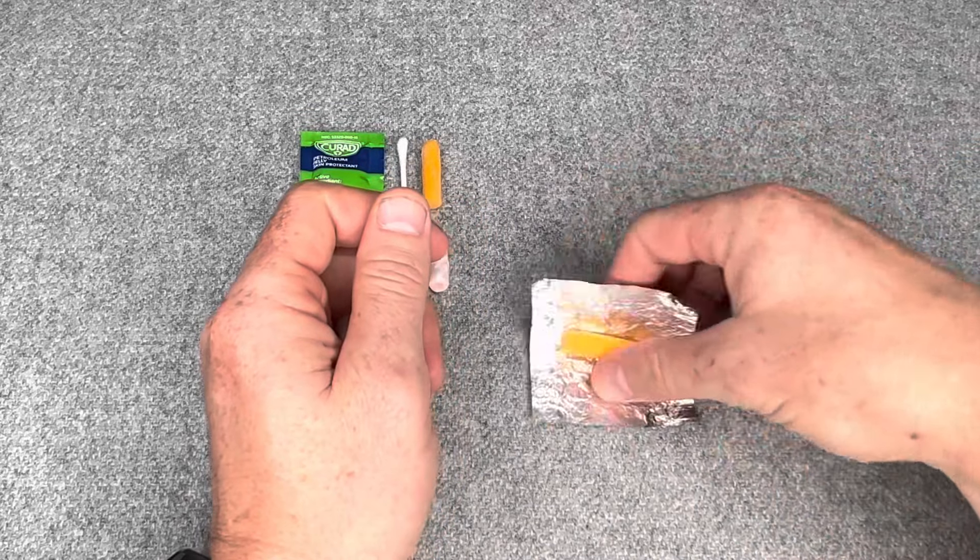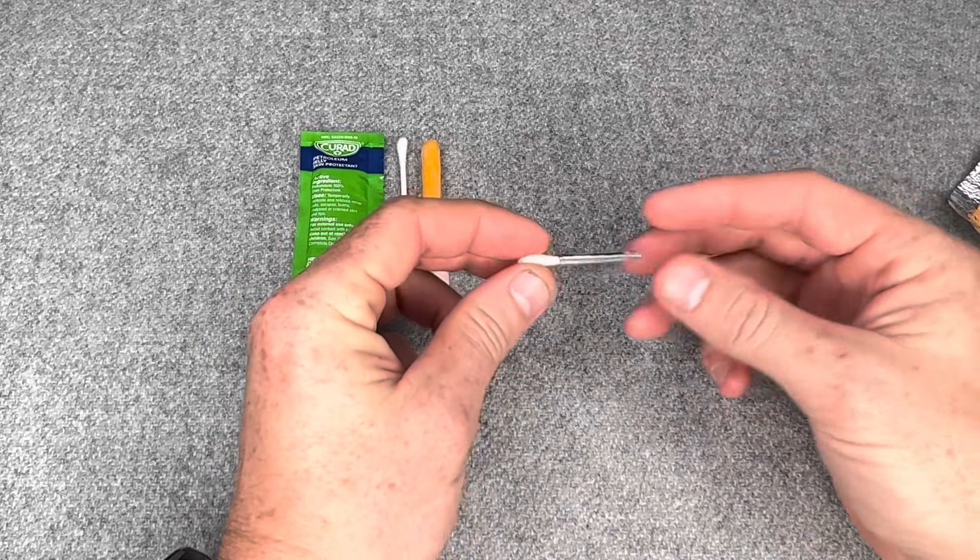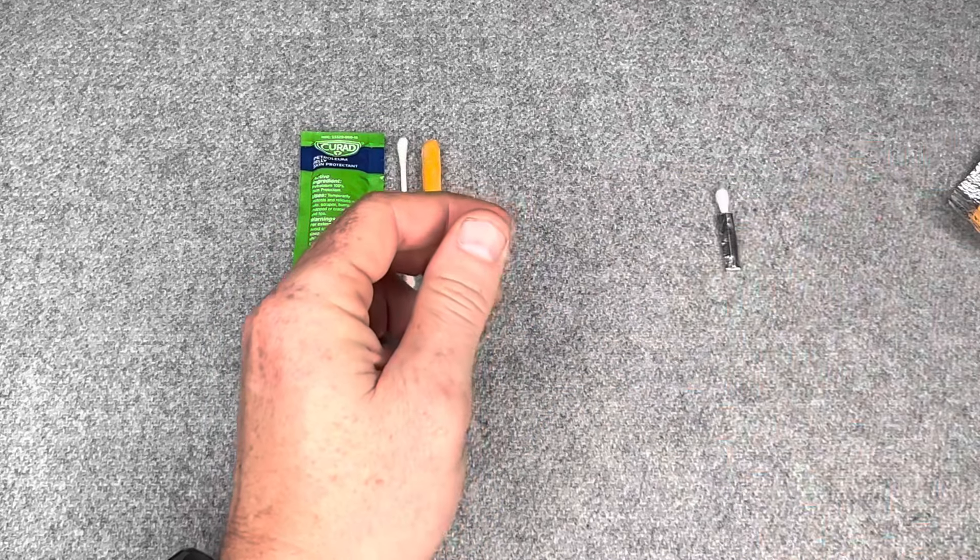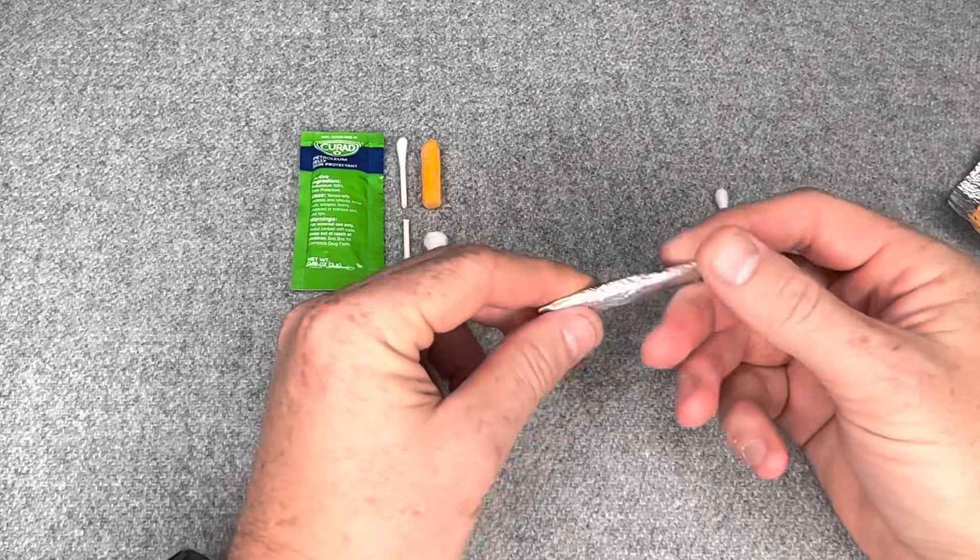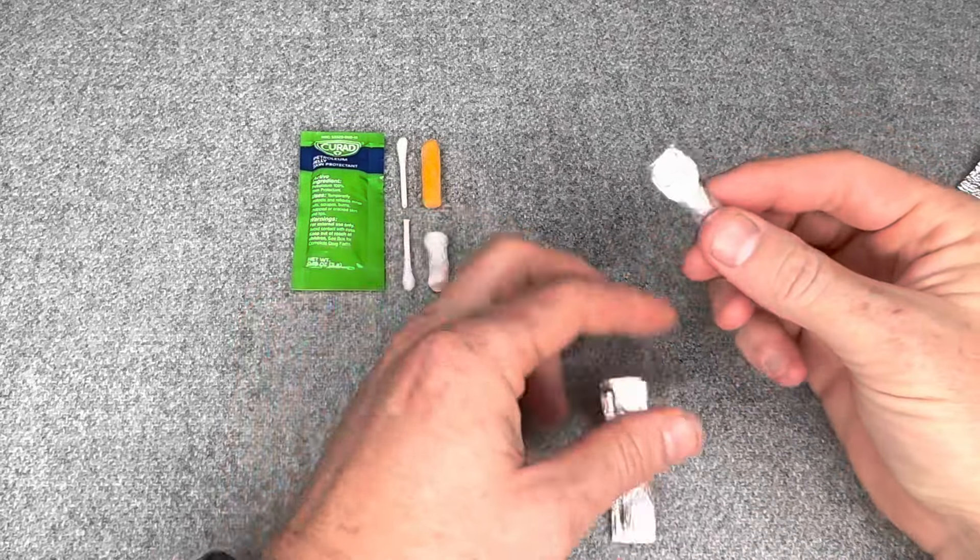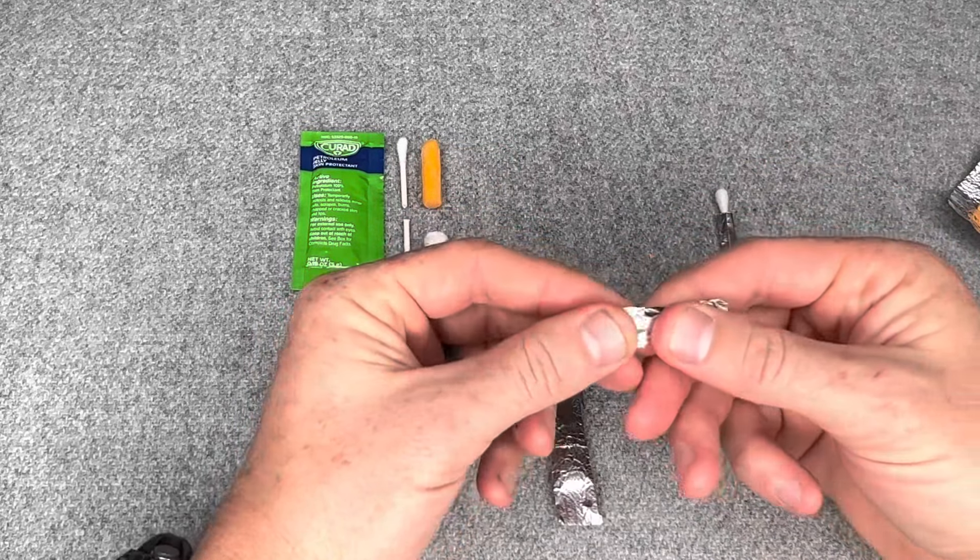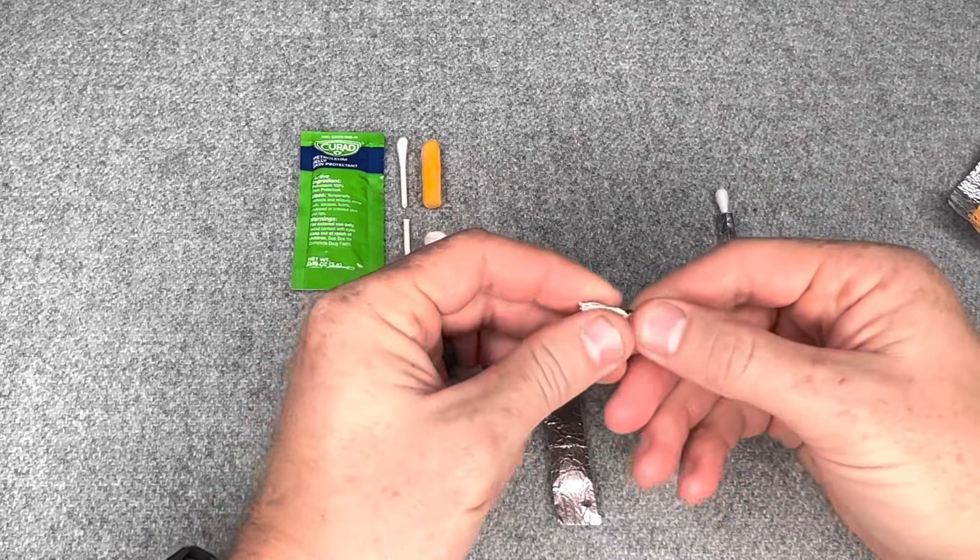I'll show you some other options here. So this is a Q-tip that I wrapped a little piece of foil around. This is a tender wick. Actually, no, this is the tender wick right here. So very low profile. And what you can do, you don't have to keep the flared out sides like that. You can fold it down on top of itself so it's a little bit more compact.